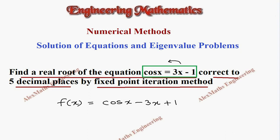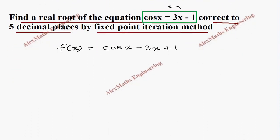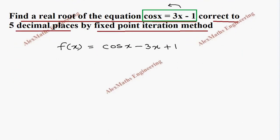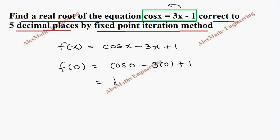We have to take a value for x and evaluate f(x) until we get opposite signs. Let's take the first value as 0. Now f(0) = cos 0 - 3×0 + 1. Cos 0 is 1, and this is 0, and the last term is 1, so totally we get 2, which is a positive value.